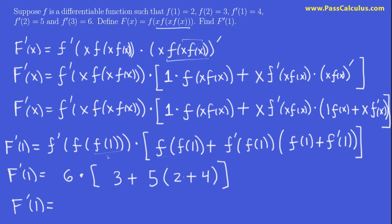So this is what we have, and now it's easy. 2 plus 4 is 6; times 5 is 30; plus 3 is 33. What is 33 times 6? That's 198. Let me just double check: 6 times 5 is 30, plus 3 is 33, times 6 — yes, 198. So that was a little bit brutal, but if you understood that, then your chain rule must be getting pretty good.